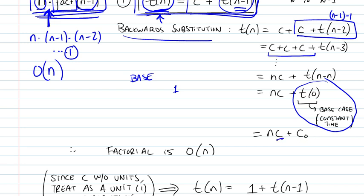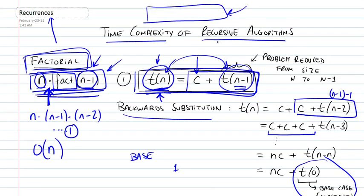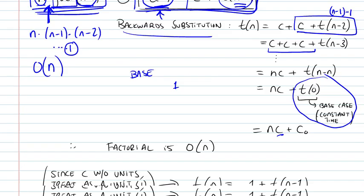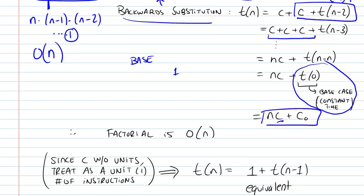Just to differentiate it from that constant number of steps. And finally, this recurrence relationship, which basically was to give us the time complexity of our recursive algorithm, reduces all the way to nc plus c0.